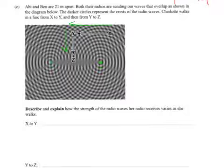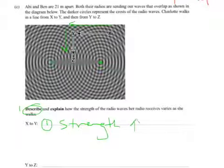Describe and explain, so it's two things, one is describe, one is explain, how the strength of the radio waves her radio receives varies as she walks. So this is a very classic interference question. As she's travelling from X to Y, describe what happens where you're going to be crossing over regions. So describe for the first part, the strength of the radio waves will increase and then decrease and then increase and then decrease as she walks across, so alternating increasing and decreasing.